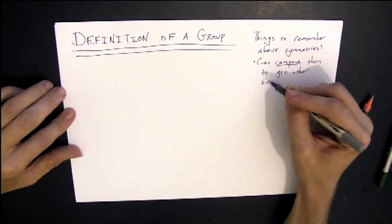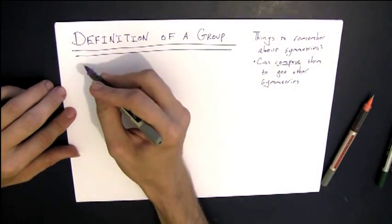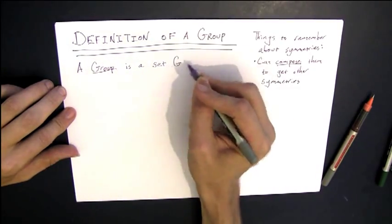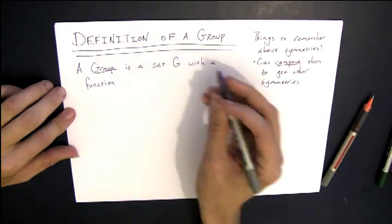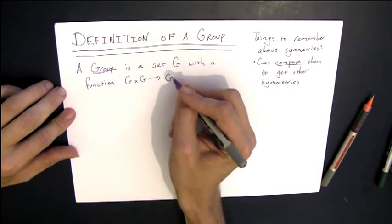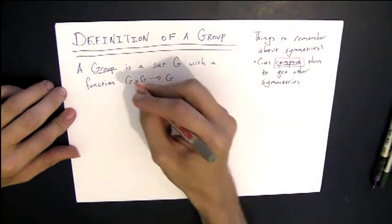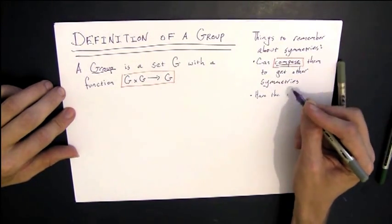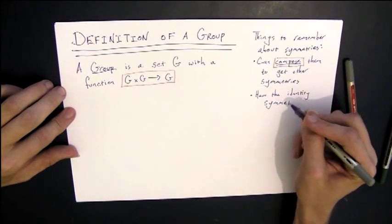The first thing to remember about symmetries is that you can compose them and get other symmetries. Likewise, a group is going to be a set G, some things, and there's a function where you take two things from G, put them together, and get another thing from G. Just like when I take two symmetries, I put them together via composition and I get another symmetry back.